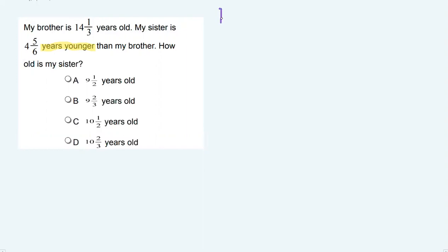I know that the brother is 14 and one-third years old and the sister is four and five sixths years younger. It didn't say that she was four and five sixths years old. It says that she was four and five sixths years younger. So I know that I need to subtract to determine her actual age.